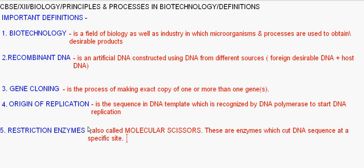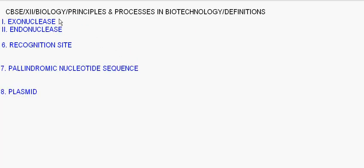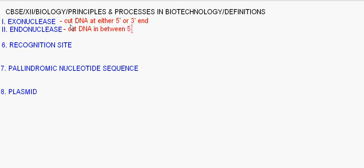These enzymes are basically of two types: exonucleases and endonucleases. Exonucleases cut DNA at either the 5 prime or 3 prime end. Endonucleases cut DNA in between the 5 prime and 3 prime end at a specific site.